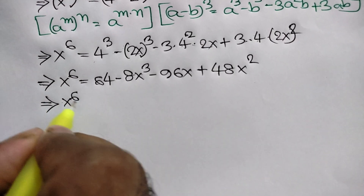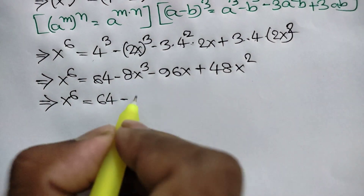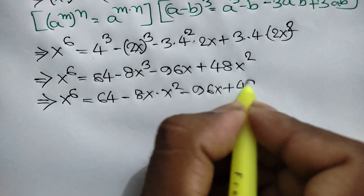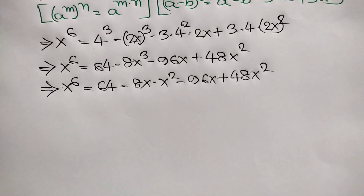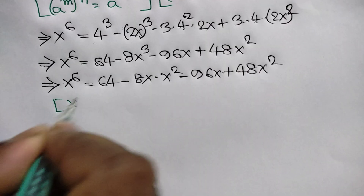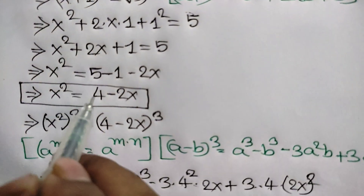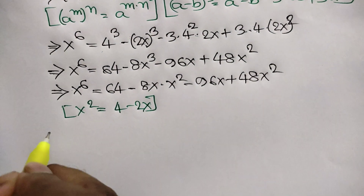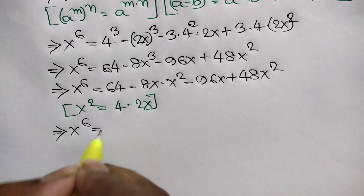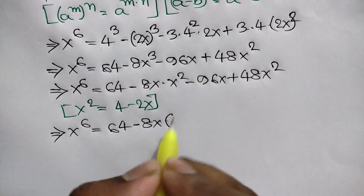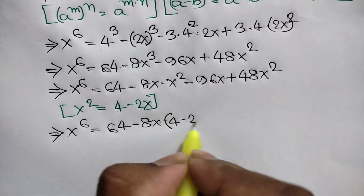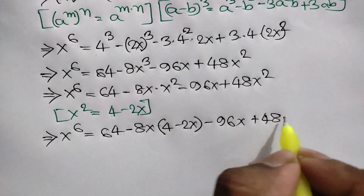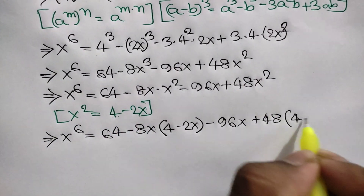So x to the power 6 equals 64 minus 8x times x squared minus 96x plus 48x squared. Remember, x squared is equal to 4 minus 2x. So substituting: x to the power 6 equals 64 minus 8x times (4 minus 2x) minus 96x plus 48 times (4 minus 2x).